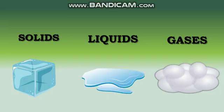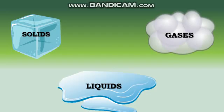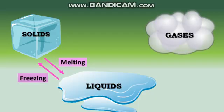When a solid turns into a liquid, it's called melting. For example, ice turns into water when it's left at room temperature. When a liquid changes into a solid, it's called freezing.